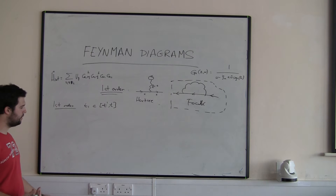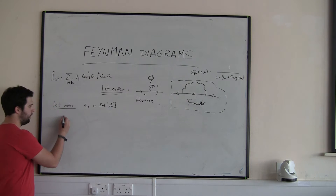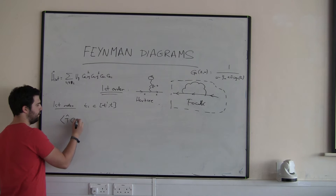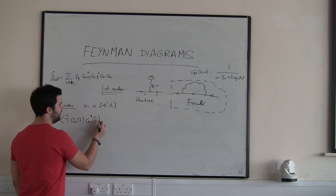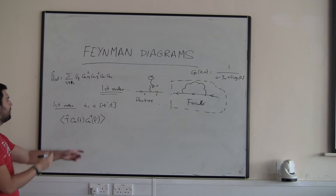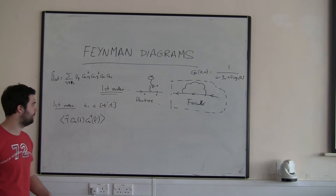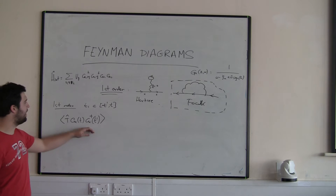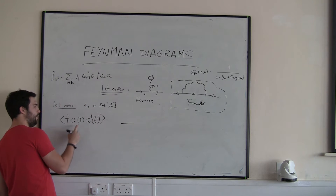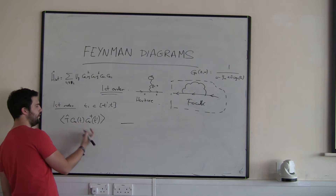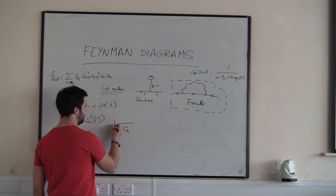I want to calculate the single-particle Green's function, because the single-particle Green's function is defined between t and t-dash. It's a probability amplitude of how the particle propagates from time t-dash to time t, interacting with the surrounding system. I start by putting my operator c_k acting at time t — an annihilation operator — and this is my time t.